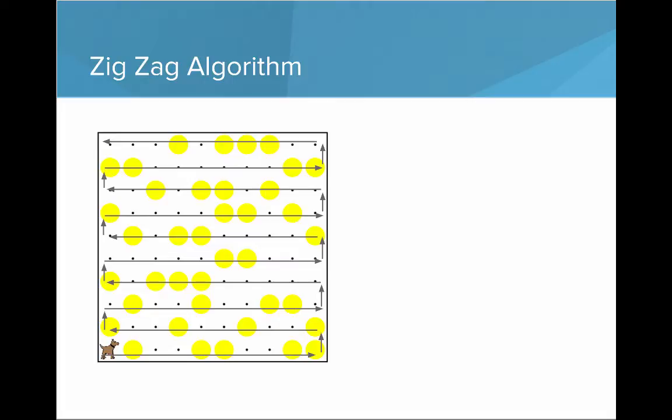So here's an algorithm. This would be a zigzag algorithm, where Karel goes down one row and then up and then across the back row and then up and then across the next row and then up. This is our algorithm, our step-by-step process for how to solve this problem.